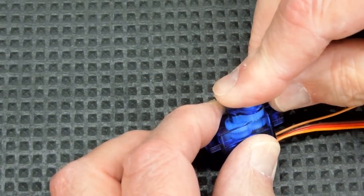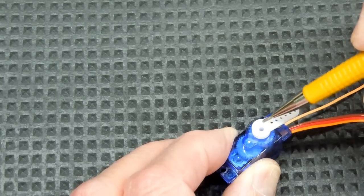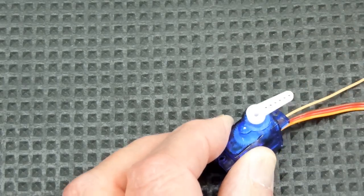These servos come with an assortment of little control horns that snap on there, then there's a small screw that goes in here and keeps it in place.